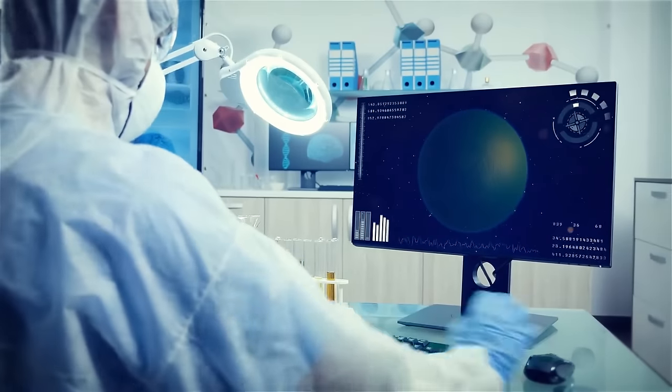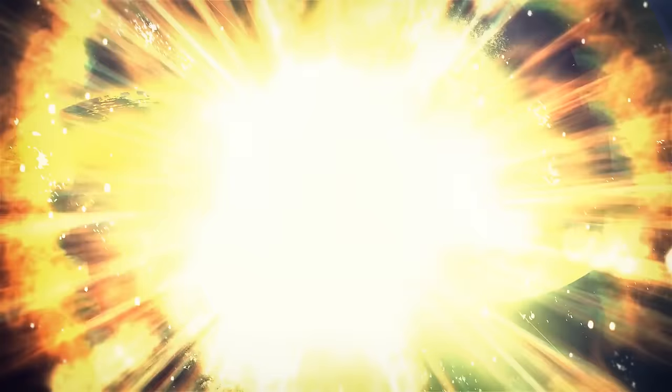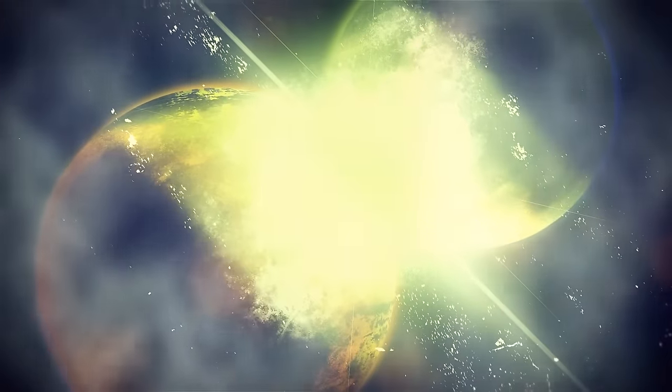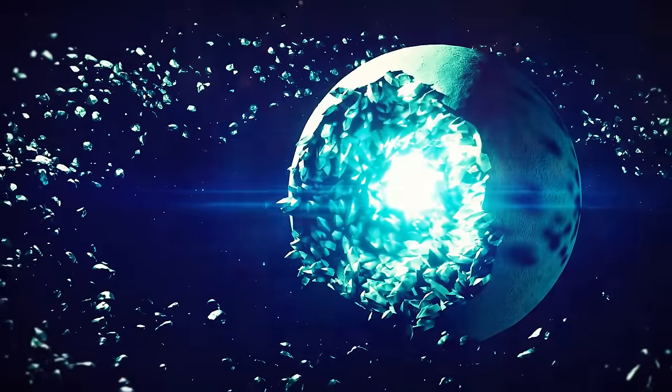Some scientists believe that Kepler-107b is less dense because it probably collided with another unknown planet in the past. This powerful hit took away part of its surface and left behind a very dense core rich in iron.